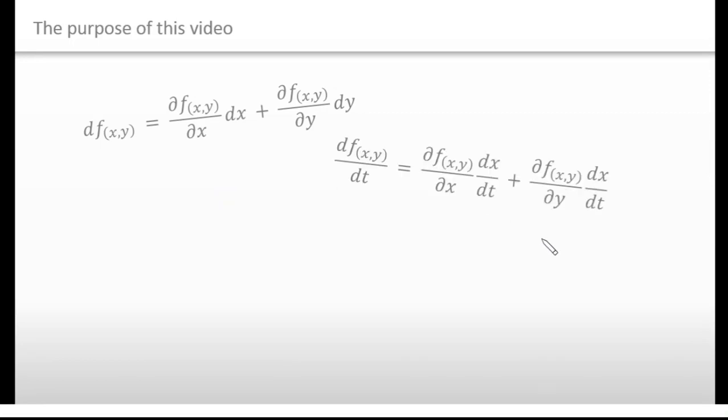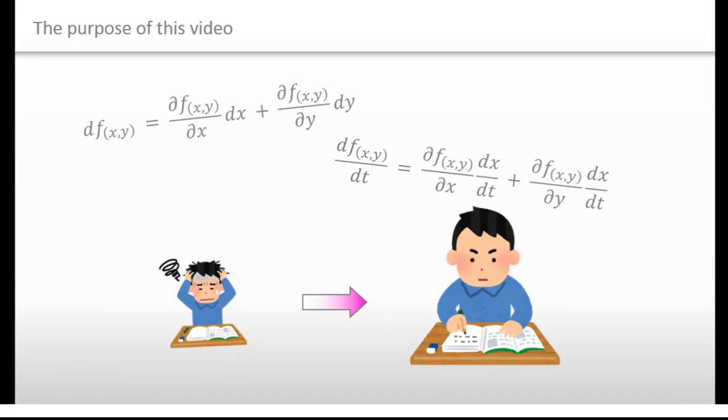We are going to talk about total differential in two variables. This is strongly related to this equation, which is called chain rule. If we have a clear concept of these equations, we will be able to read many academic books easily.